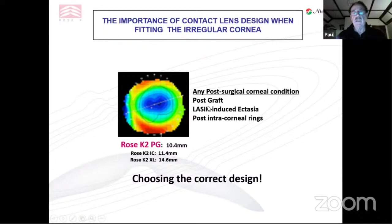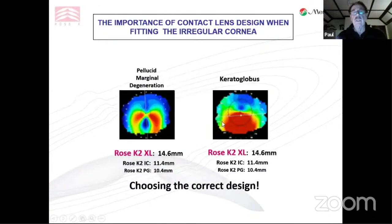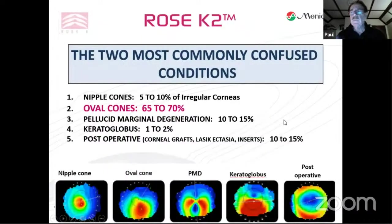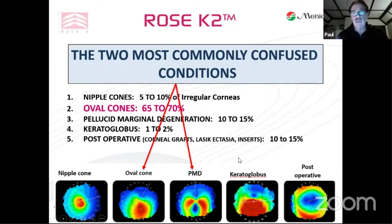For pellucid or globus, I immediately move to a semi-scleral design — my XL corneal scleral design. I want to spend a moment on two conditions that are commonly confused, because they require different lenses. If you've got pellucid, you need to go to a semi-scleral design. If you have an oval cone, your first choice should be a corneal lens design. With keratoconus, the Ks in the flat meridian are steeper than 8.0 and you have a typical pattern, often with some normal cornea between the base of the cone and the limbus.